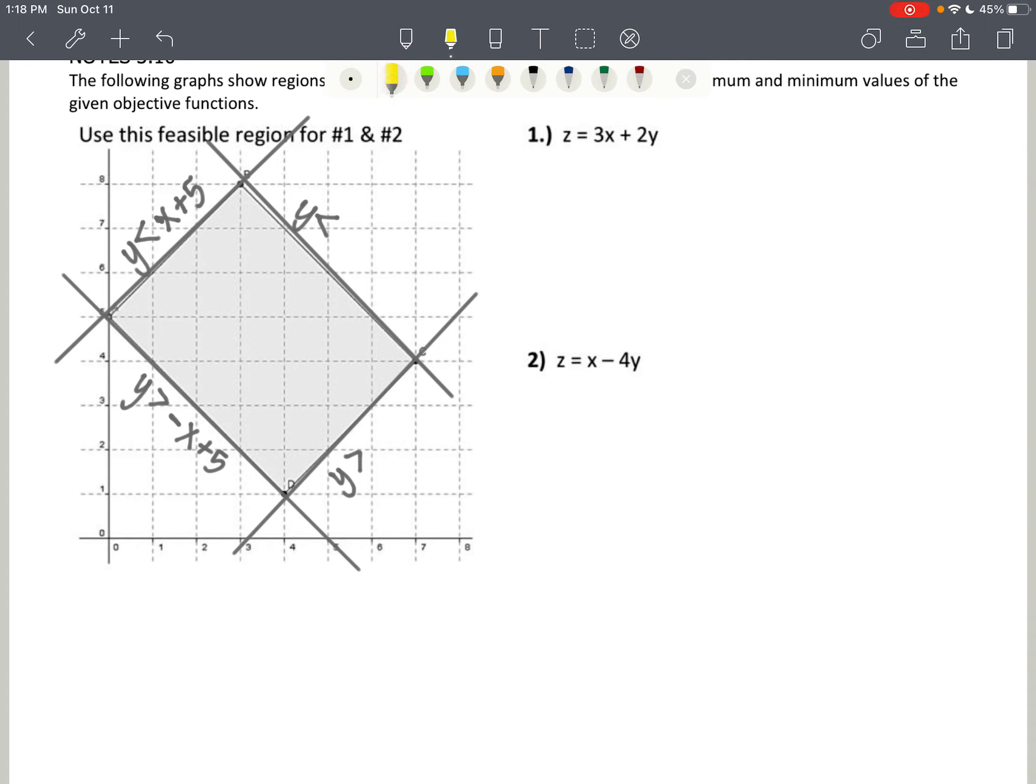Now these are boundary lines. So these are all boundaries. And inside we have what is called the feasible region. So inside is the feasible region.